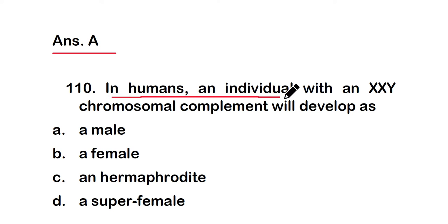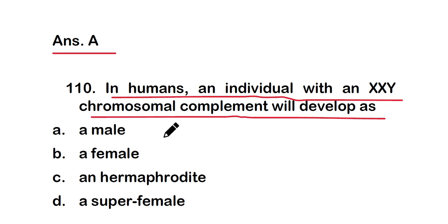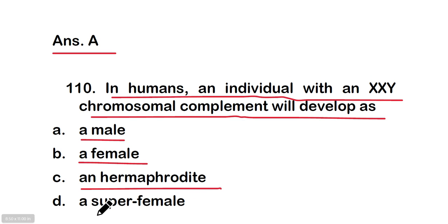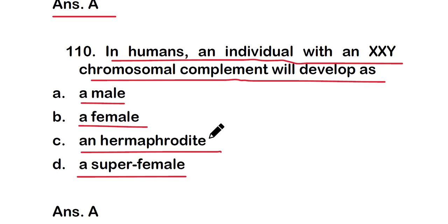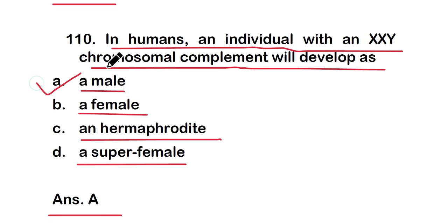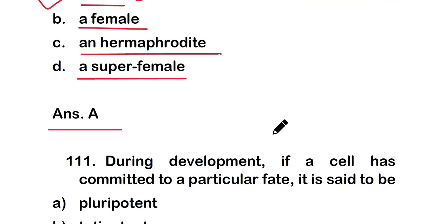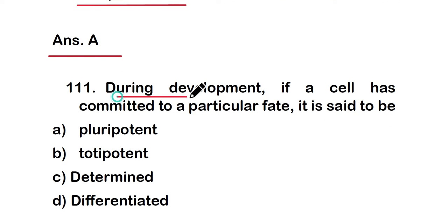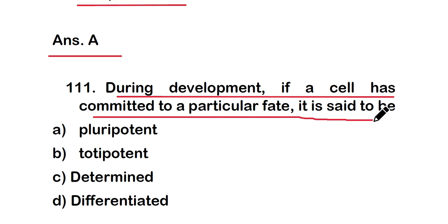Question 110: In humans, an individual with an XXY chromosomal complement will develop as: (a) a male, (b) a female, (c) a hermaphrodite, or (d) a super female. The correct answer is option A — an individual with XXY chromosomal complement will develop as a male.